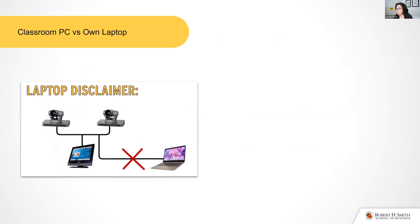The difference between using the classroom PC and a laptop is that the classroom PC has the room mics and cameras connected to it. If you want students to see the board you're writing on, it's best to use the classroom PC. If you prefer your laptop, just be aware the room cameras won't connect to it — you'll be using your laptop camera and built-in mic. Make sure your laptop is facing where you want: toward you, or toward the whiteboard behind you.